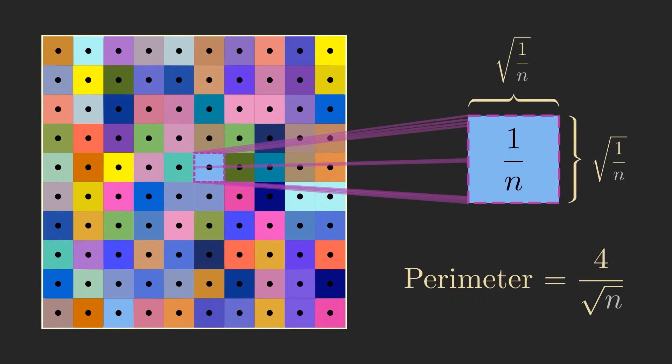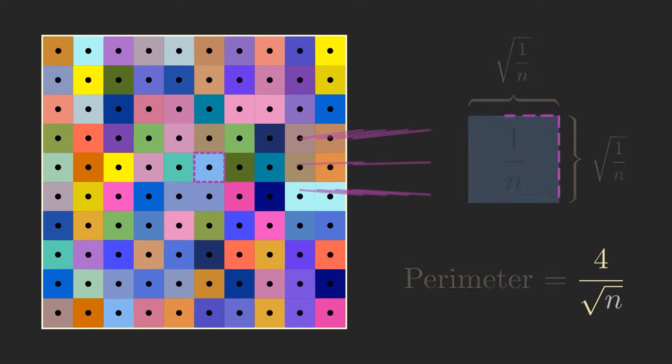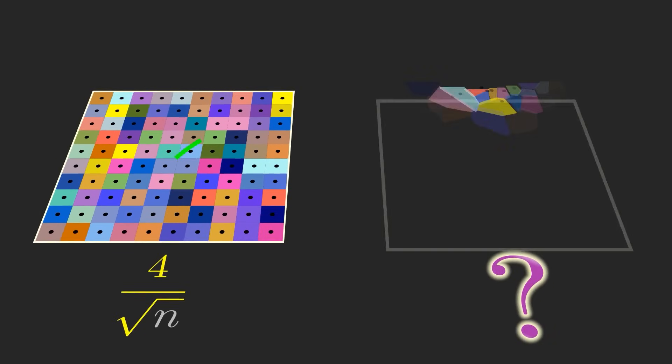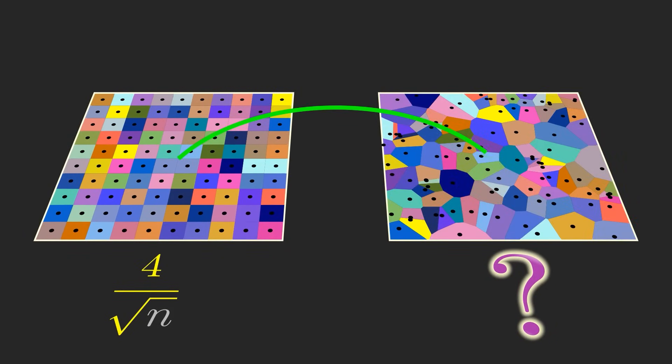Now, clearly this is not going to be quite right. Random Voronoi diagrams are not going to look like a perfect grid of squares. But in a moment, we're going to put our estimate to the test with a computer simulation.